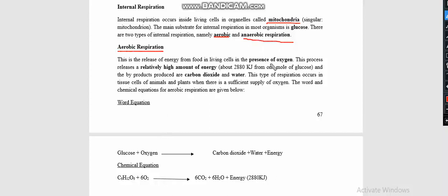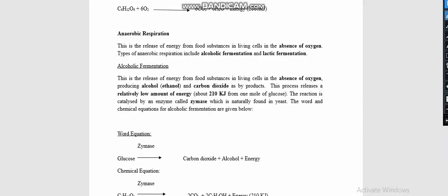Internal respiration is divided into two: aerobic and anaerobic. Aerobic requires oxygen, so it takes place in the presence of oxygen. Glucose plus oxygen forms carbon dioxide, water, and energy. In a chemical equation, it's glucose plus oxygen to carbon dioxide, water, and a very large amount of energy, which is 2,880 kilojoules of energy.